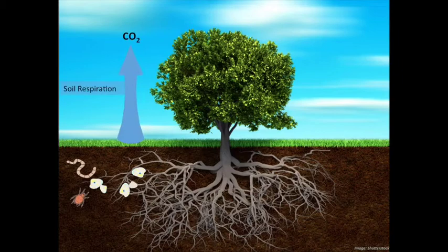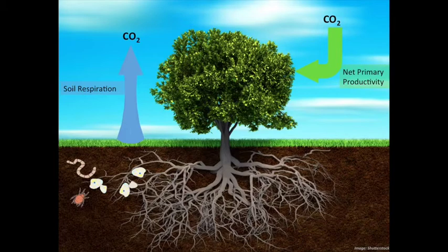Soil respiration is a major flux of carbon dioxide to the atmosphere. Each year, about 75 petagrams of carbon enter the atmosphere through this process, which is about the same as net primary productivity from plants.